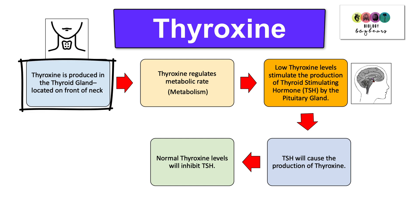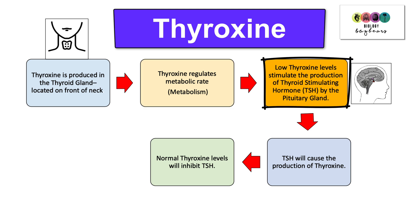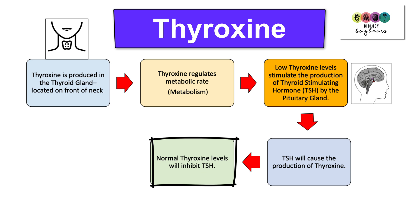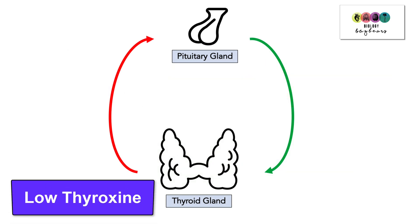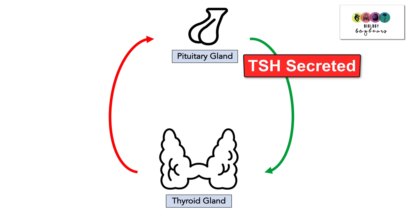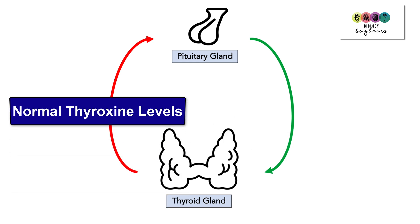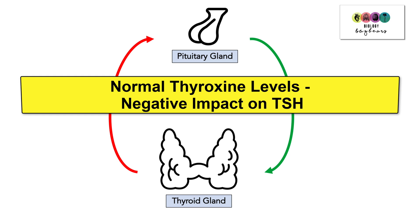Thyroxine is produced in the thyroid gland, located on the front of the neck, and it regulates metabolic rate. When thyroxine levels are low, this stimulates the production of thyroid stimulating hormone (TSH) by the pituitary gland in the brain. TSH then causes the production of thyroxine, and when normal levels of thyroxine return, it will inhibit the production or secretion of TSH. So normal levels of thyroxine have a negative impact on the secretion of thyroid stimulating hormone.